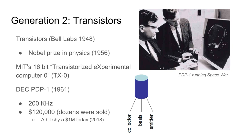From here we move on to the second generation of computers, fundamentally based on the transistor. Transistors were introduced by Bell Labs in 1948, and by 1956 the inventors had won the Nobel Prize in Physics. MIT introduced a 16-bit transistorized experimental computer called the TX-0.